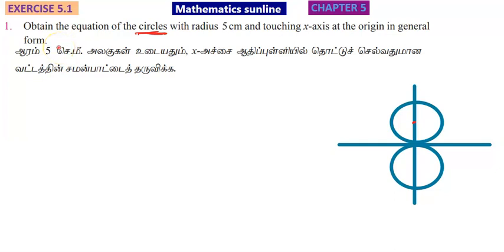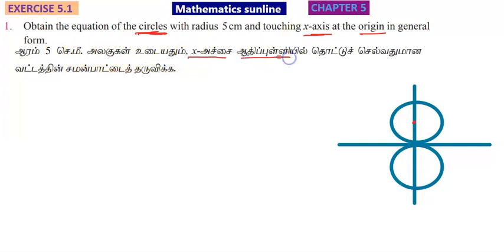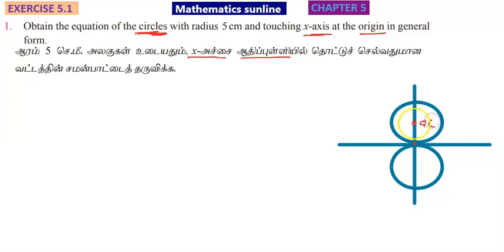Here we have circles with radius 5 cm touching the x-axis at the origin. This is the general form. We have a circle with radius 5 cm and the x-axis at the origin. If there is more than one circle, here we have one circle and here we have another circle.